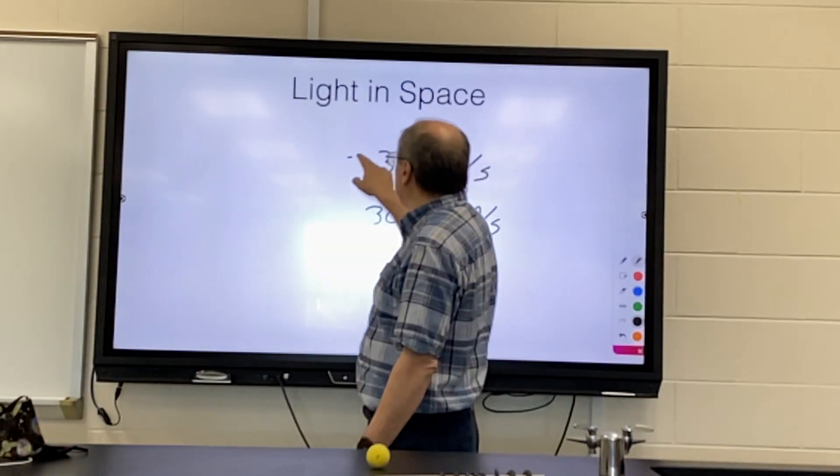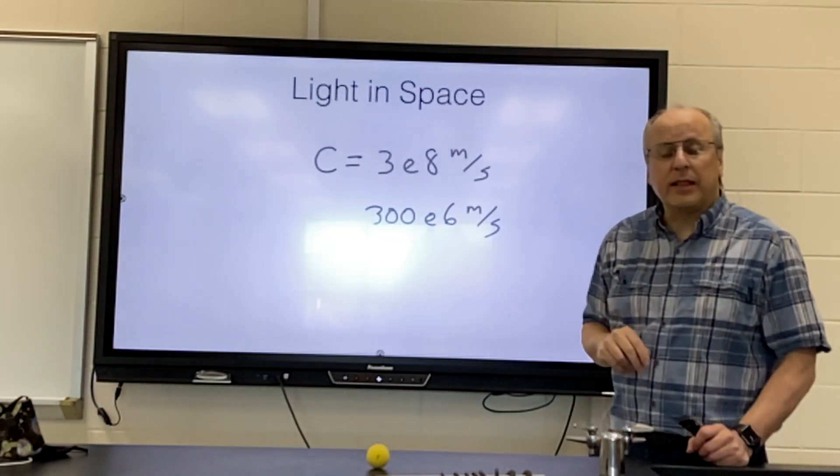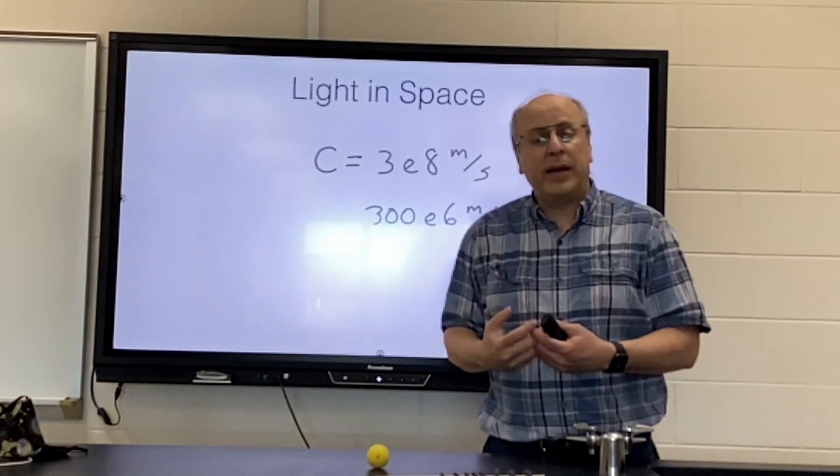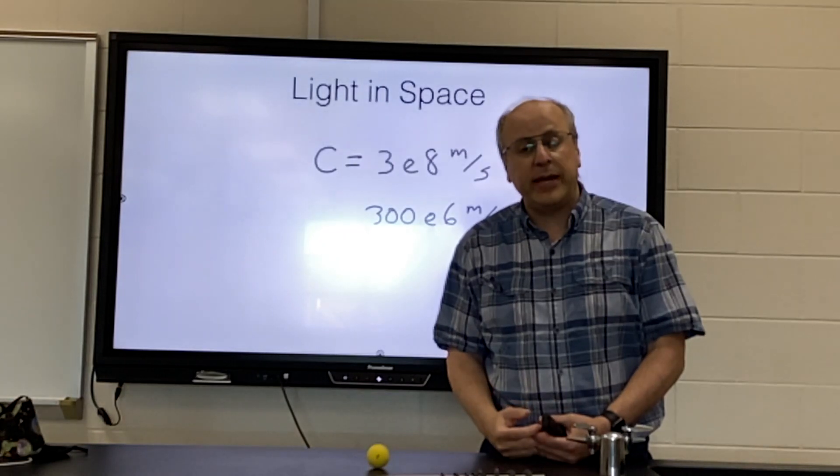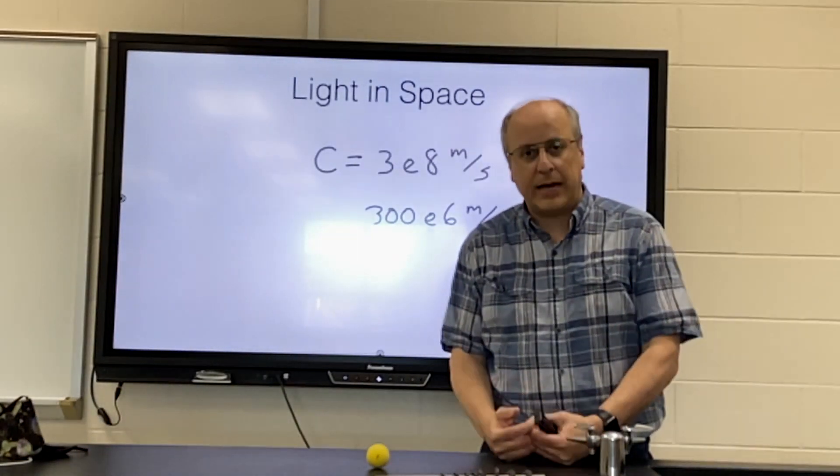This is such a special speed that it often will be designated with the letter c, a small c. Whenever you see small c in an equation it's probably referring to the speed of light in outer space.